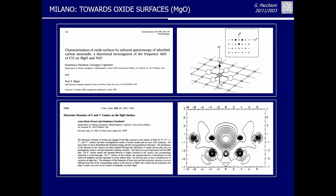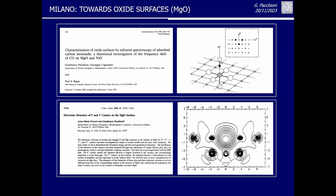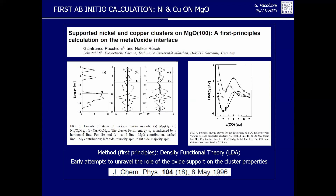We started to look at defects on oxides using larger clusters, for instance oxygen vacancies, which was instrumental to make a further step. In the mid-90s, we did the first calculations placing real clusters — four atoms of nickel, four atoms of copper — on the surface of magnesium oxide, and computing the density of states and adsorption properties. This was quite useful because around the same time, Ueli Heiz developed a fascinating technique to study clusters on surfaces using the same apparatus Smalley invented, to generate mass-selected clusters. The clusters were ionized, deflected, selected by mass, and deposited with a soft landing technique on magnesium oxide.